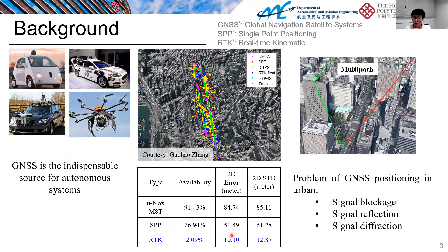The major problem arises from signal reflection and blockage from buildings, leading to the multipath effect.